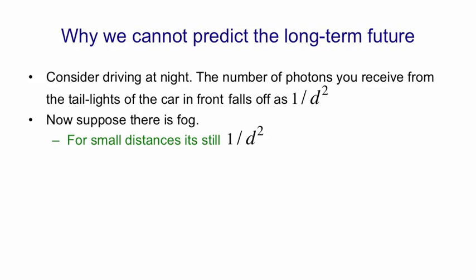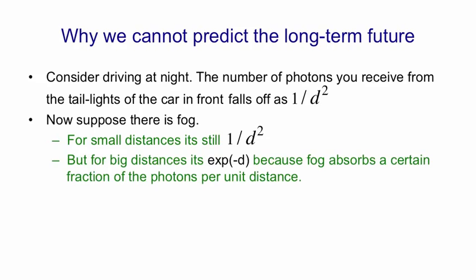Because over a short range, the fog hardly absorbs any light. But for large distances, it falls off as e to the minus d. And that's because fog has an exponential effect. Fog absorbs a certain fraction of the photons per unit distance.